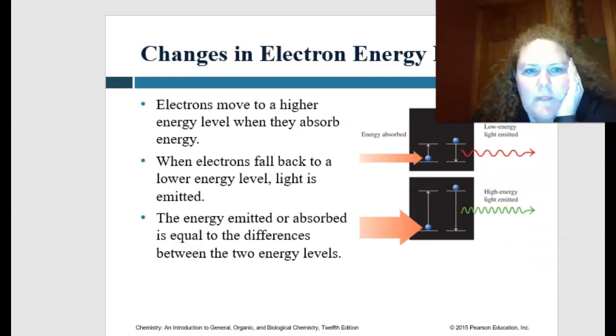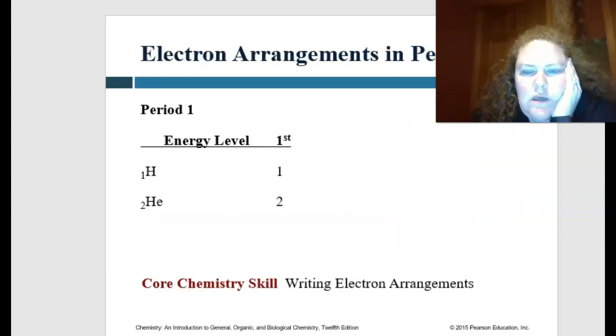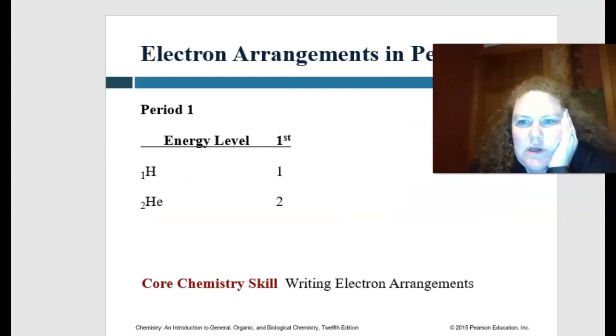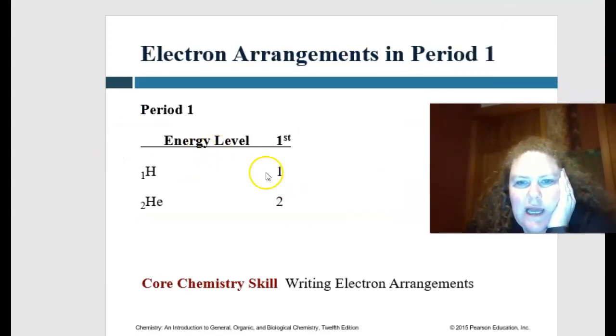So the electron arrangements in period one, you have your high energy in your first level, and it's going to be like hydrogen only has one electron, or helium has two. And so this is in that first orbital, and now we're going to learn how to write these electron arrangements.